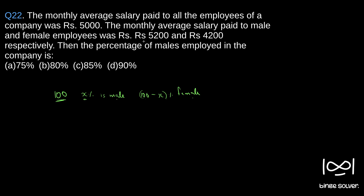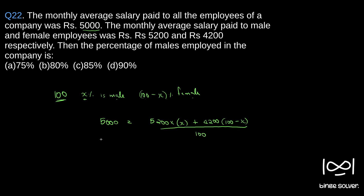The average salary of males is 5,200. The overall average of 5,000 is nothing but: 5,200 times x (number of male people) plus 4,200 times (100 minus x) (number of female people), divided by the total number of employees, which is 100. We need to solve for x from this equation.